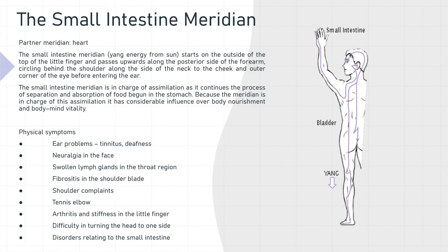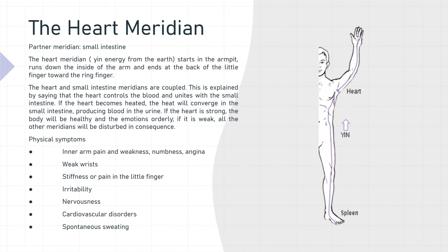The partner meridian for the heart is the small intestine. The heart meridian — yin energy from the earth — starts in the armpit, runs down the inside of the arm, and ends at the back of the little finger toward the ring finger. The heart and small intestine meridians are coupled. The heart controls the blood and unites with the small intestine. If the heart becomes heated, the heat will converge in the small intestine, producing blood in the urine. If the heart is strong, the body will be healthy and the emotions orderly. If it is weak, all other meridians will be disturbed in consequence.